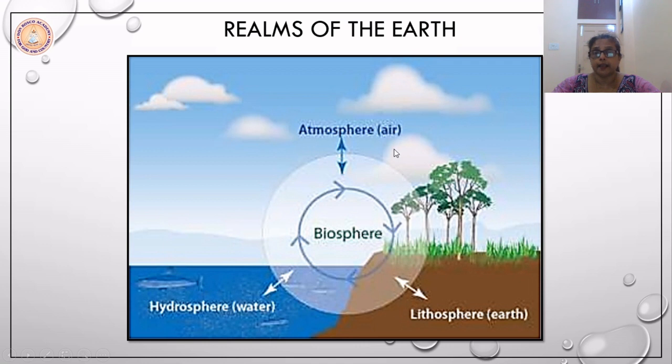They are namely the atmosphere, the hydrosphere, the lithosphere. And since there is life in all these three realms, we also call it the biosphere. Bio means life. Sphere means the earth. So the earth has got four realms: the atmosphere, the hydrosphere, and the lithosphere.